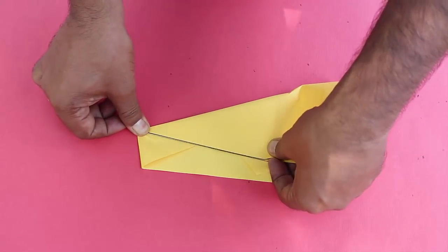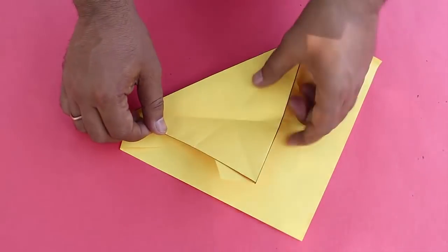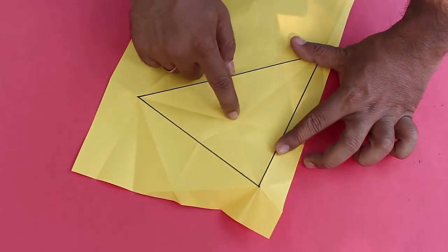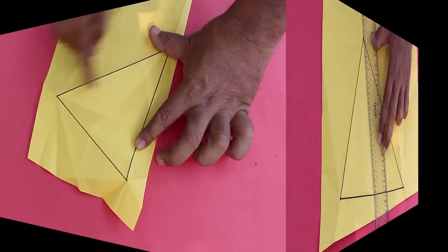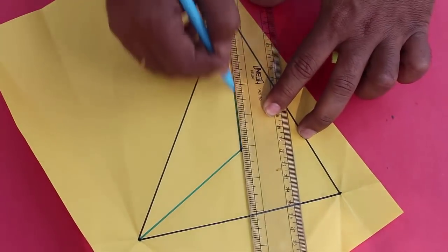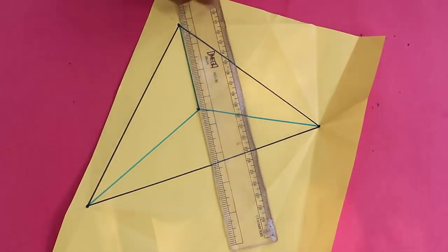And when we divide the third angle, we find that the third angle bisector passes through the same point, which is called the in-center of the triangle. Now we will draw all these bisectors, the angle bisectors of the triangle.